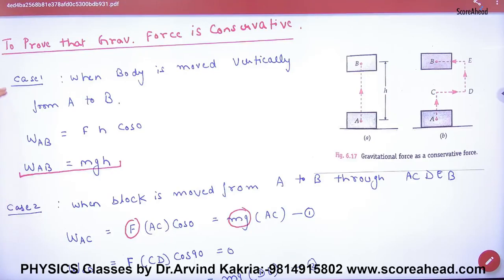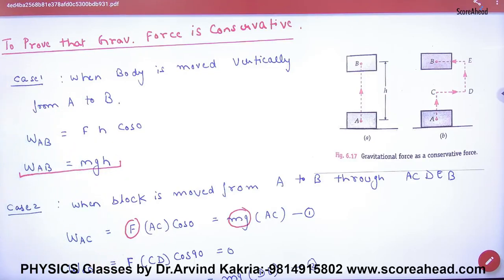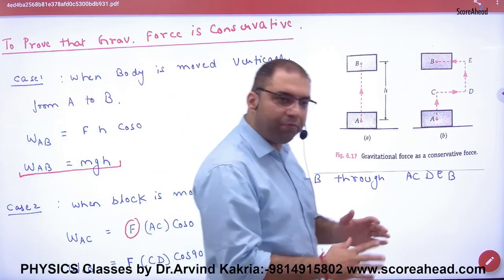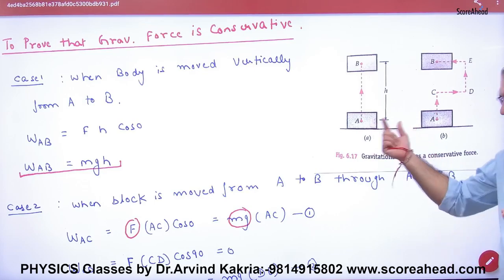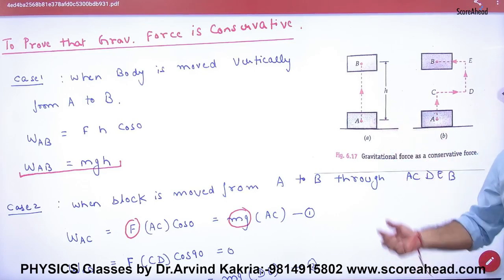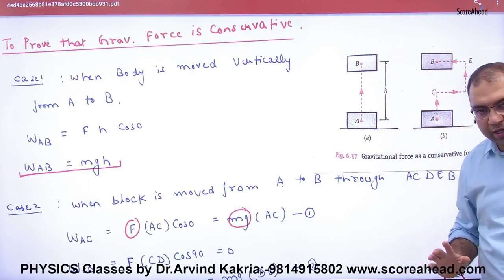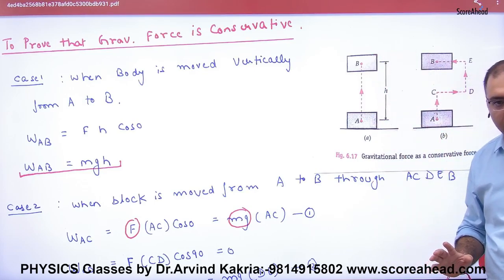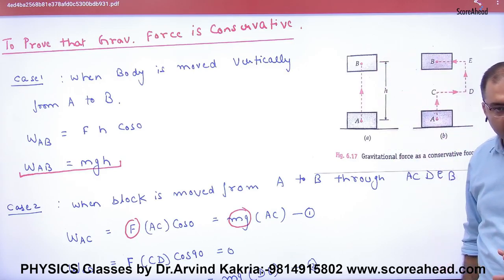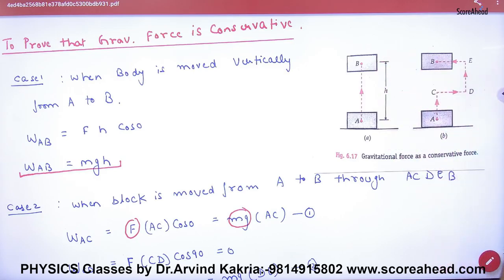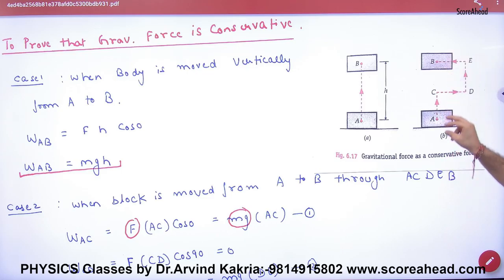The topic is to prove that gravitational force is conservative. To prove this, we take an object and move it from B to A at height H. We will go straight and calculate the amount of work done. Then we will go from A via C, taking different paths.